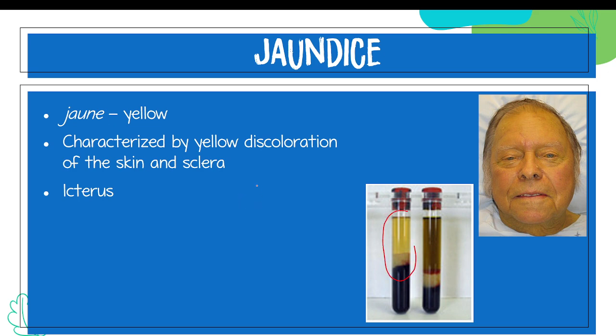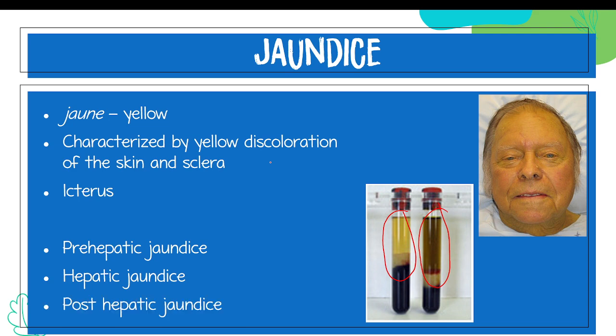Usually our serum or plasma is clear, but with an icteric sample it is very yellow — in a sense that it is somewhat greenish yellow. With jaundice, we can differentiate the conditions into three different types: pre-hepatic, hepatic, or post-hepatic. Pre-hepatic means the cause of jaundice is before the liver, hepatic means the liver itself, and post-hepatic means after the liver.